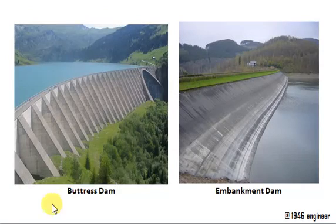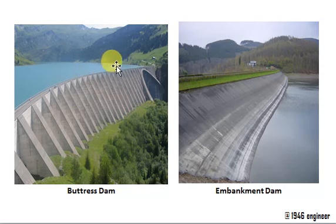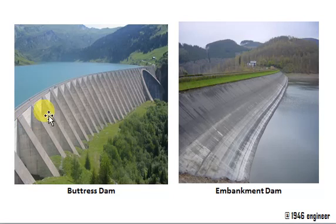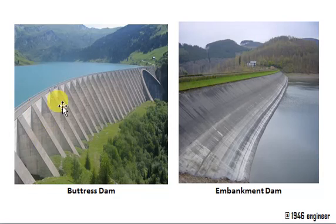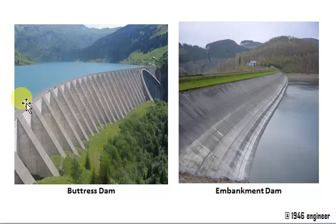We have buttress dam. This dam has a long reinforced concrete slab which is supported by buttresses. You often find these buttresses in arch shape also. This structure totally restricts the horizontal thrust of the water, and this is also an ancient Roman technique.